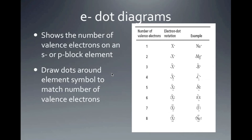Electron dot diagrams are used in covalent and ionic bonding to show the number of valence electrons on the S and P block elements. We draw dots around the element symbol to match the number of valence electrons — 1 valence electron equals 1 dot, up through 4 dots for 4 valence electrons. The maximum is 8 dots, since the maximum number of valence electrons is 8.